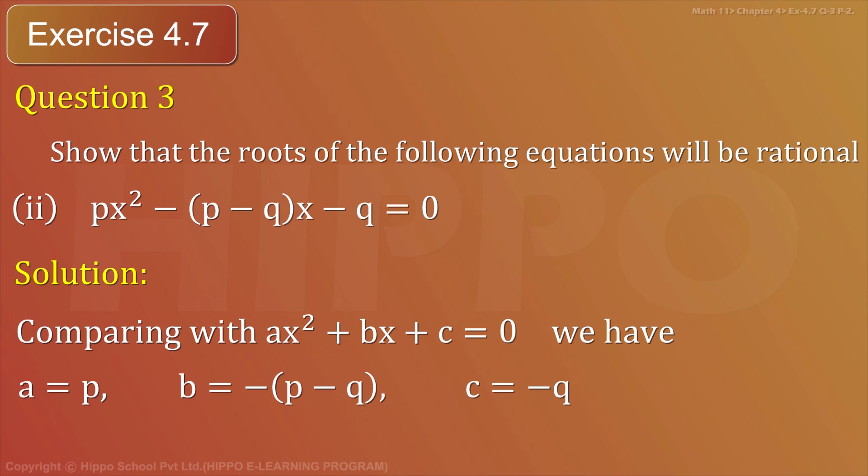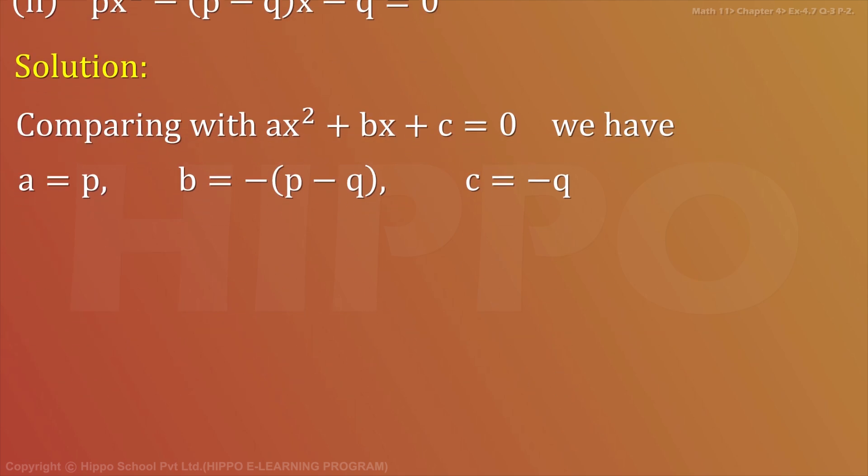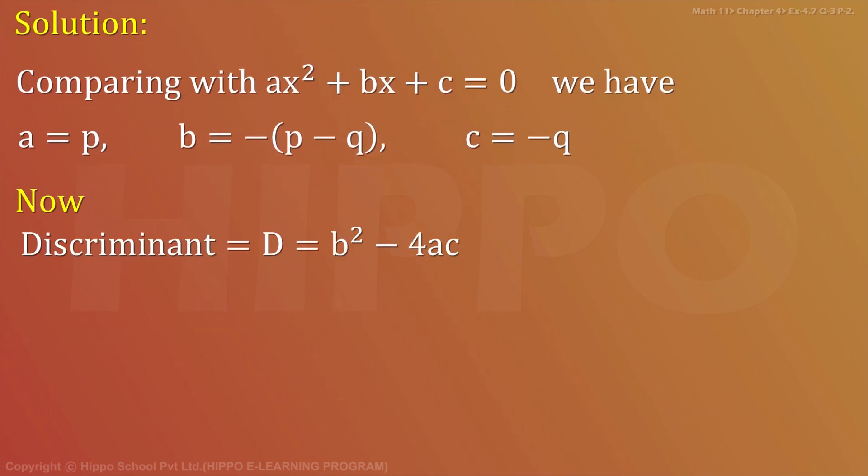c = -q. Now, discriminant D = b² - 4ac. This equals [-(p - q)]² - 4(p)(-q).